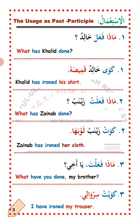Thalatha, number three. Maza fa'alata ya ahi? — What have you done, my brother? Answer: Kawaitu sirwali — I have ironed sirwali, my trouser. La'allaka fahimt? I hope you understand. MashaAllah.